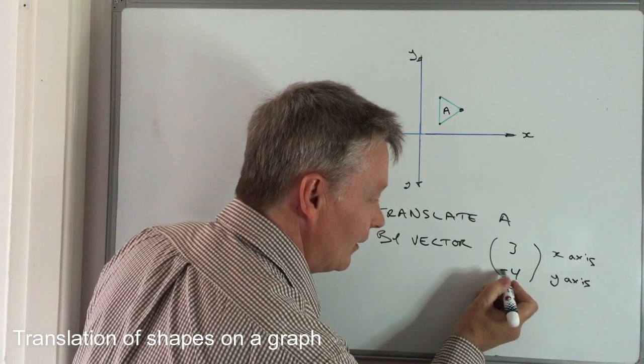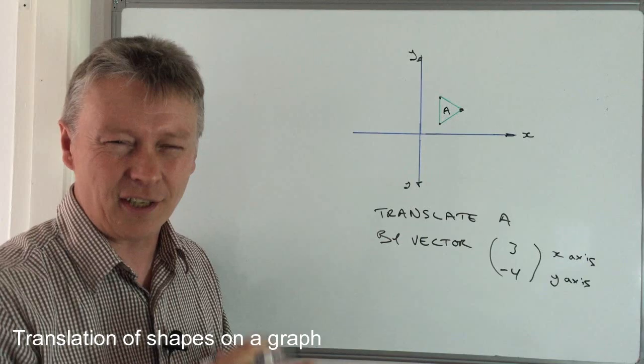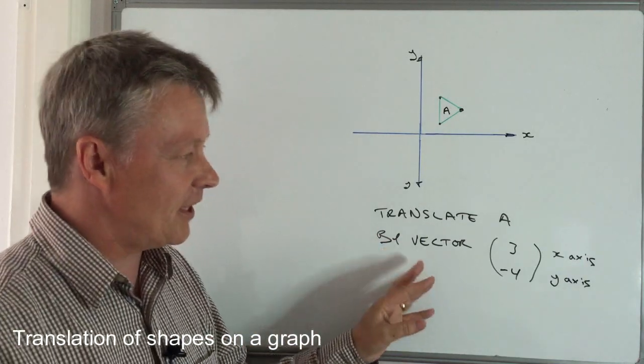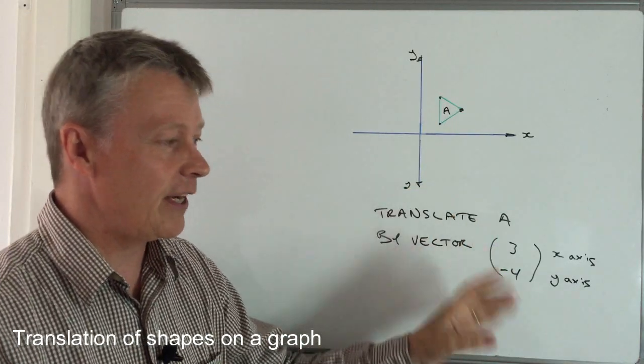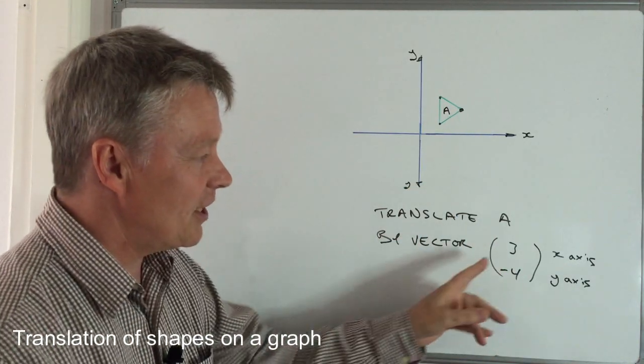In this particular case, we're looking at translating A by vector (3, -4). So the first thing is we move it three units along the positive direction of the x-axis.